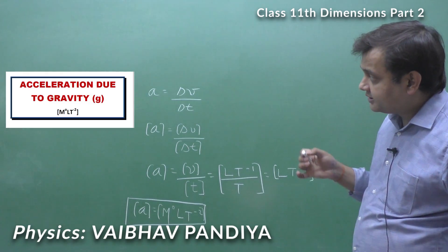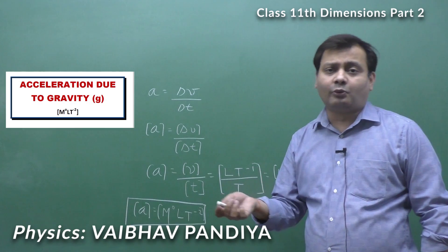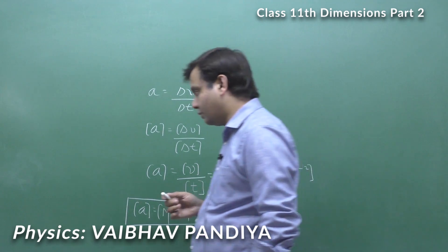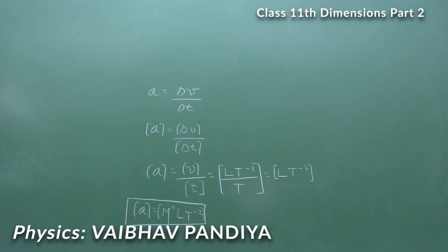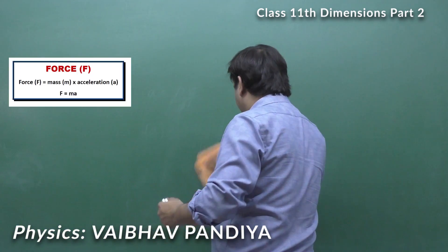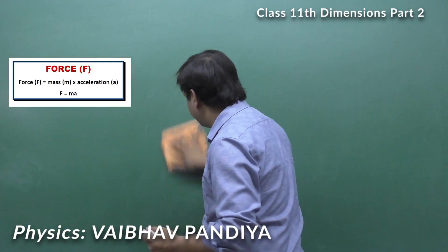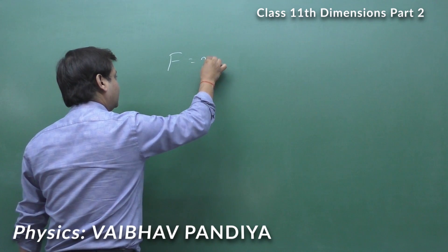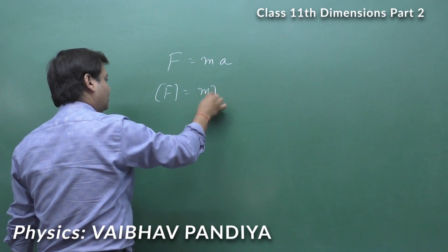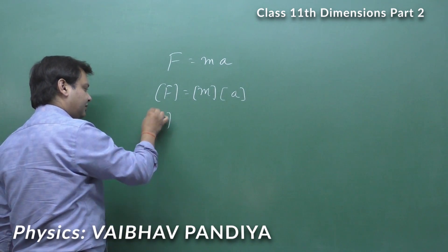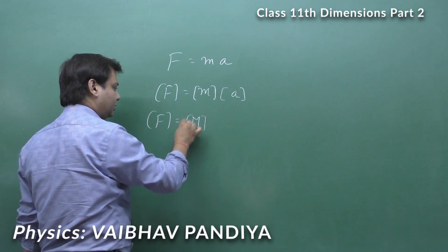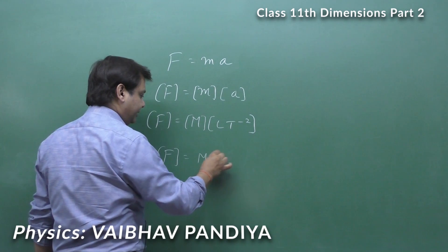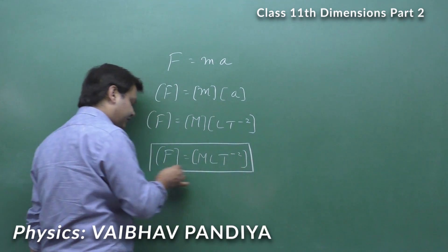For force, the basic formula is F = ma (mass × acceleration). Mass is a fundamental quantity with dimensional formula M, and acceleration is LT⁻². So the dimensional formula for force is MLT⁻². For work, the formula is force × displacement, giving ML²T⁻². So work has dimensional formula ML²T⁻².